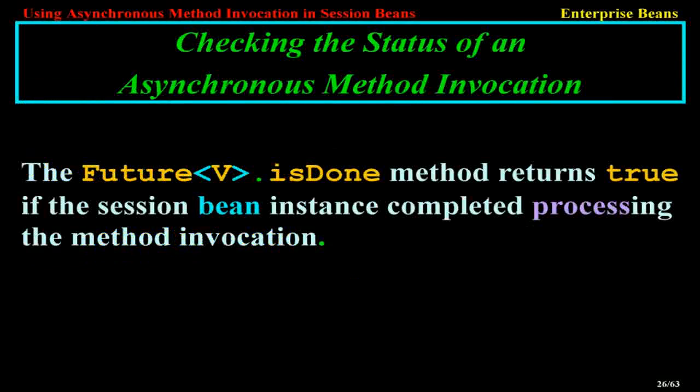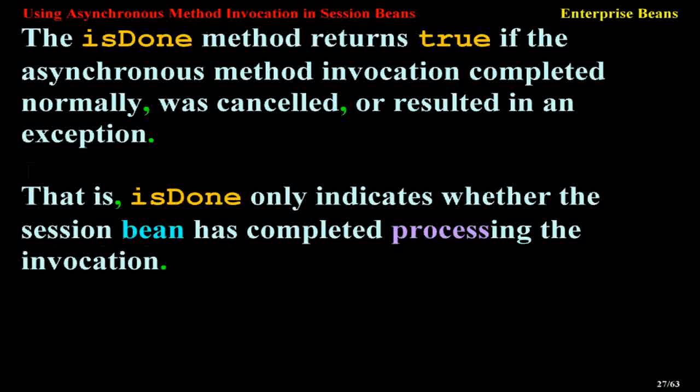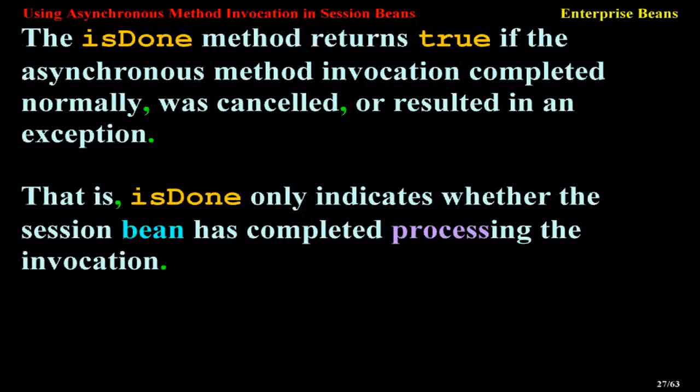Checking the status of an asynchronous method invocation: the Future<V>.isDone() method returns true if the Session Bean instance completed processing the method invocation. The isDone() method returns true whether the invocation completed normally, was cancelled, or resulted in an exception — it only indicates whether the Session Bean has finished processing.